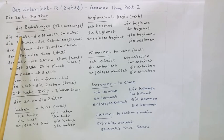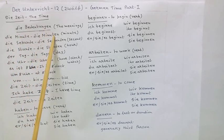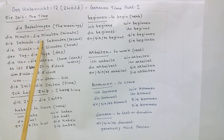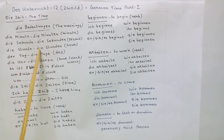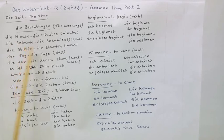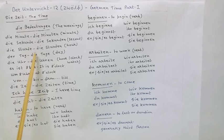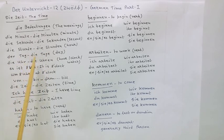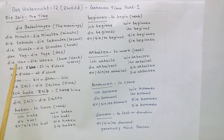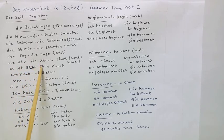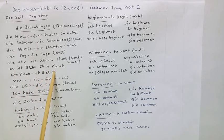So to recap: die Minute, die Minuten — minute, minutes. Die Sekunde, die Sekunden — second, seconds. Die Stunde, die Stunden — hour, hours. Der Tag, die Tage — day, days. Die Uhr, die Uhren — hour, clock, or watch. Es ist acht Uhr — it is eight o'clock. Um acht Uhr — at eight o'clock.